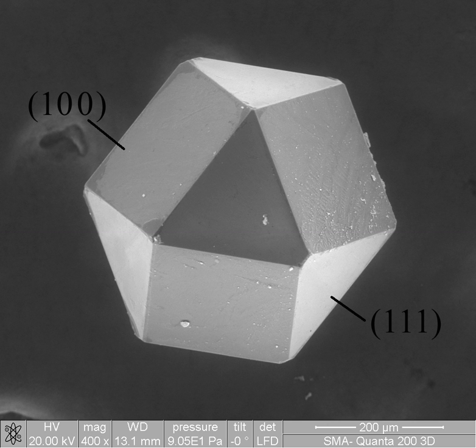Nanotubes have two dimensions on the nanoscale, i.e., the diameter of the tube is between 0.1 and 100 nanometers, its length could be much greater. Finally, spherical nanoparticles have three dimensions on the nanoscale, i.e., the particle is between 0.1 and 100 nanometers in each spatial dimension.